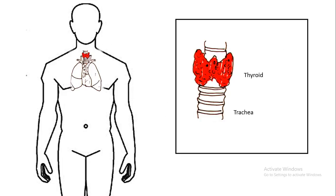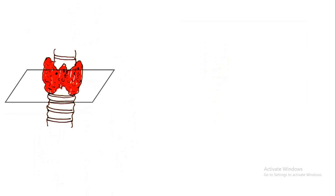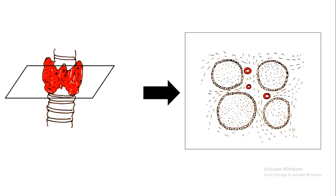The thyroid gland is situated just below the hyoid bone on the trachea, and the two lobes are joined by a region known as the isthmus. If we take a cross section of the thyroid gland, we would see several follicles known as thyroid follicles, formed of follicular cells. Inside the follicle there are colloidal substances known as colloid. The thyroid gland gets its blood supply from the superior and inferior thyroid arteries.